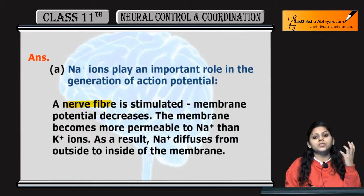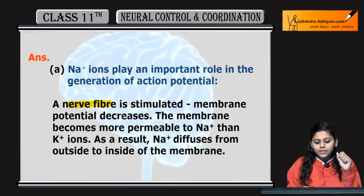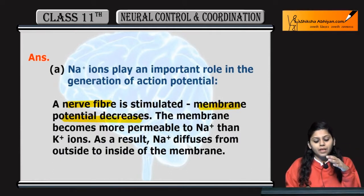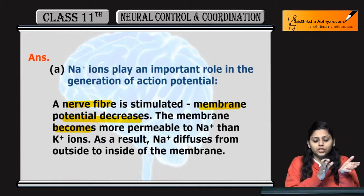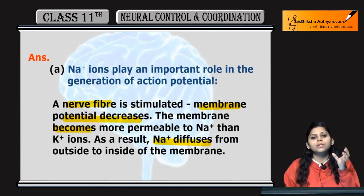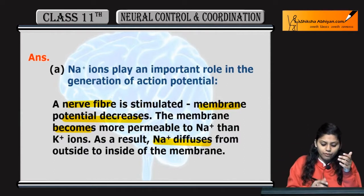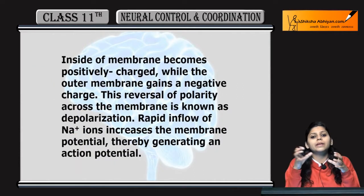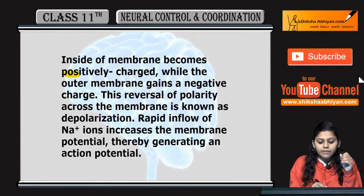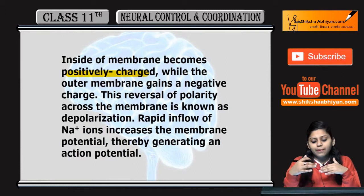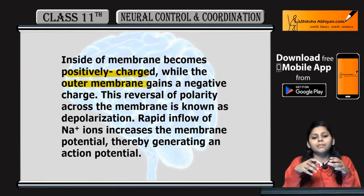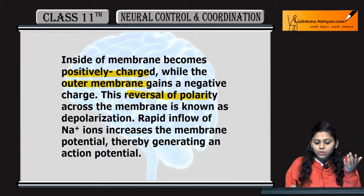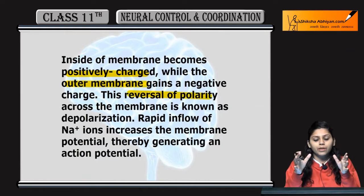When a nerve fiber is stimulated, the membrane potential decreases. The membrane becomes more permeable to sodium ions than potassium ions, as a result of which sodium ions diffuse from outside to the inner side of the membrane. Inside, the sodium ions positively charge the membrane, while the outer membrane gains a negative charge. This reversal of polarity across the membrane is called depolarization.